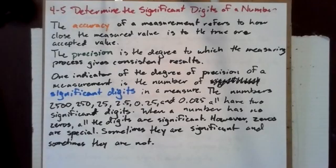In this video, we will look at determining the significant digits of a number. The accuracy of a measurement refers to how close the measured value is to the true or accepted value. The precision is the degree to which the measuring process gives consistent results.